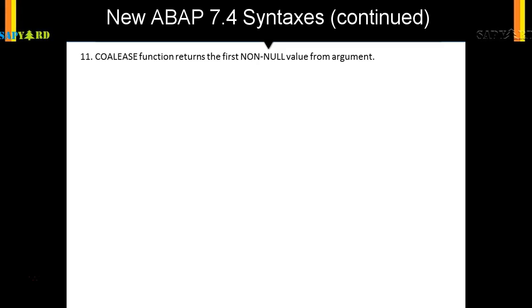If field 2 is available, then field 2 will be displayed. If not, it will check for field 3. If field 3 is available, field 3 will be displayed. If not, go for the next argument. So that is called COALESCE.